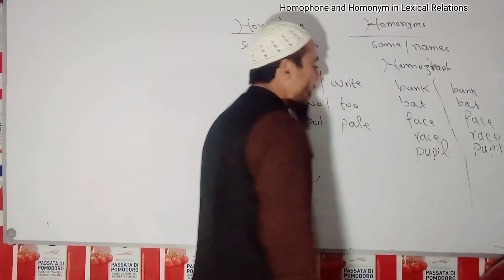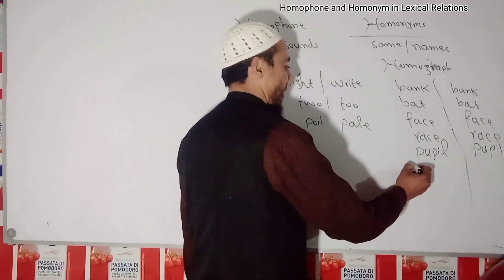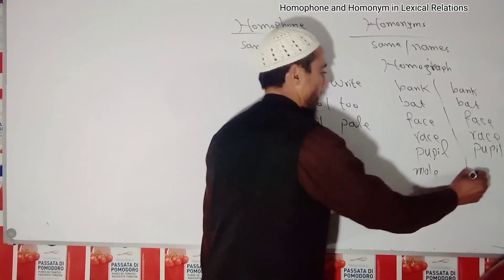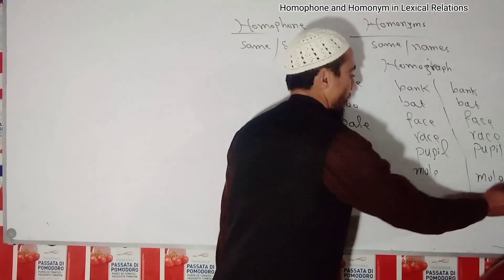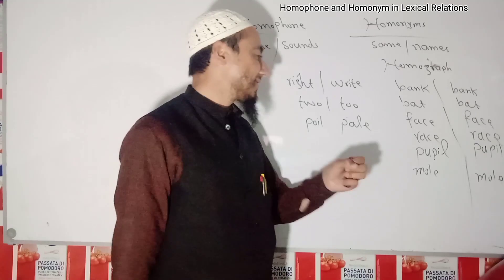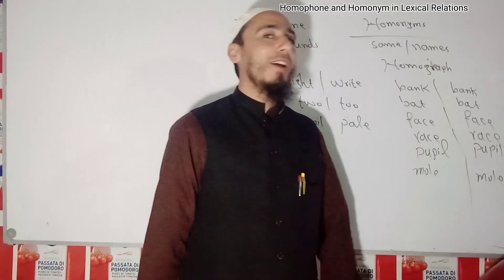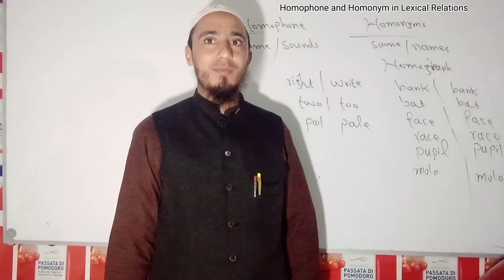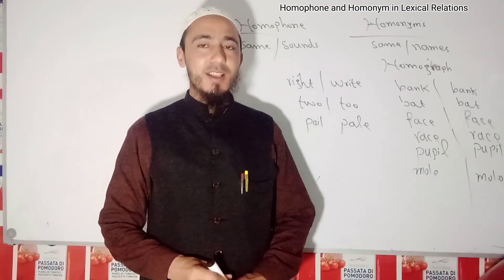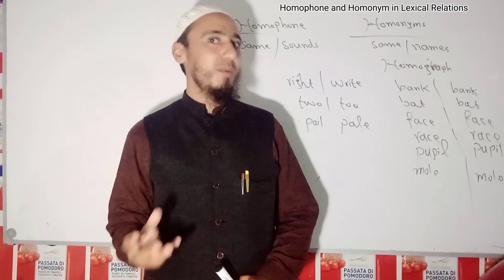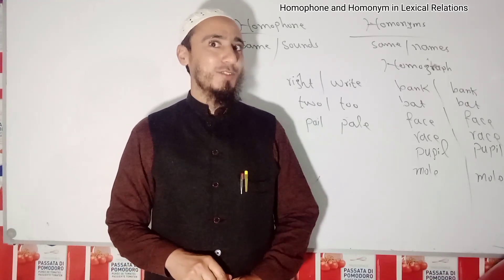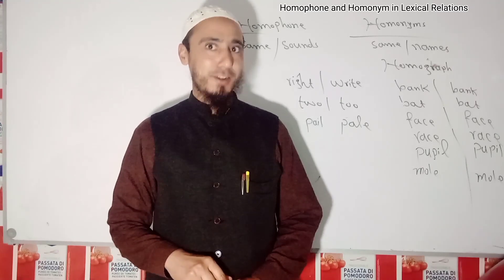We also have 'mole' — one mole refers to a small spot on human skin, and another mole refers to an animal. Listeners and audience, there are many other examples. I have presented some of them for clarification. I hope these topics are all clear to you. Thank you.